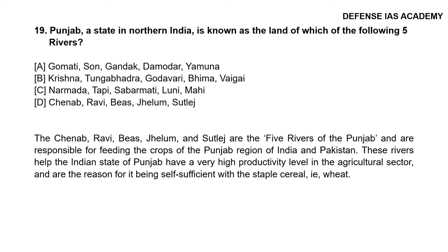Question 19: Punjab, a state in northern India, is known as the land of which five rivers? The correct answer is option D: Chenab, Ravi, Beas, Jhelum and Sutlej. These five rivers are responsible for feeding the crops of the Punjab region of India and Pakistan. They help the Indian state of Punjab have very high agricultural productivity and are the reason for it being self-sufficient in the staple cereal, wheat.